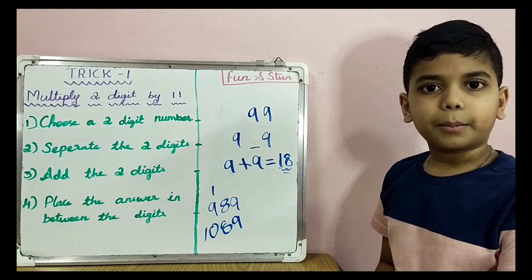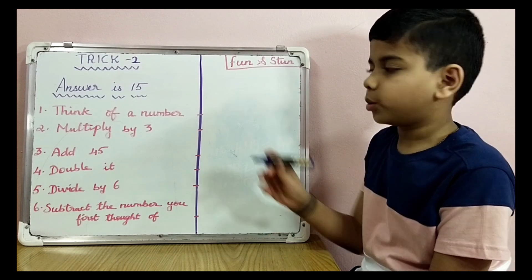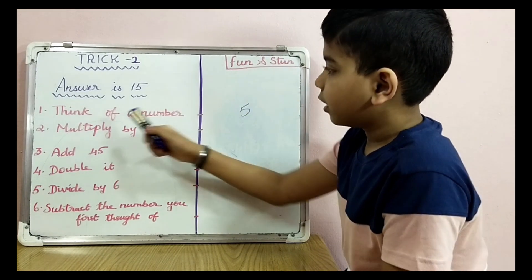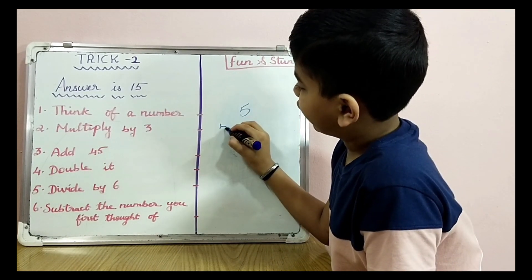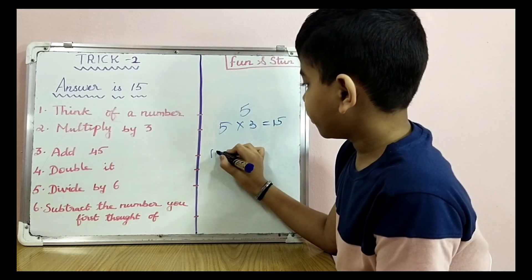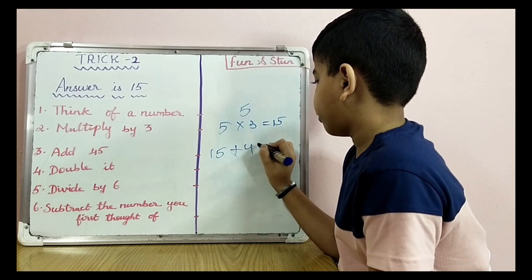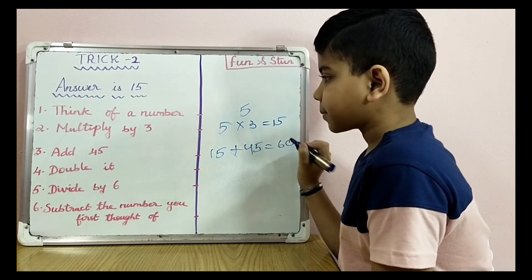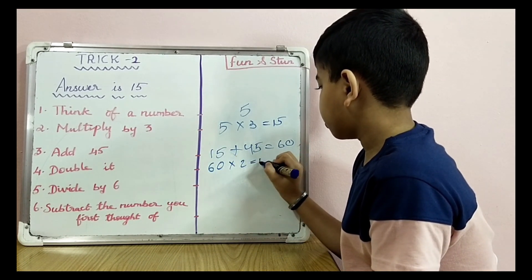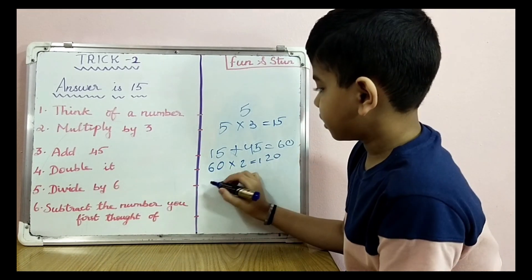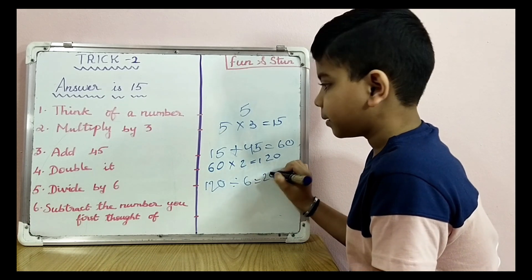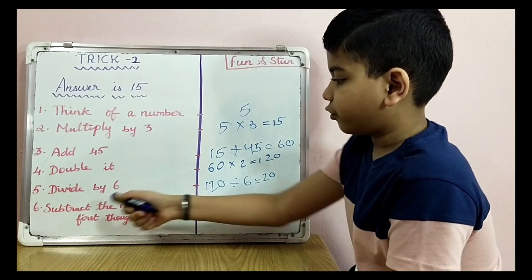Let's move on to Trick 2. Answer is 50. Think of a number. I'm going to choose 5. Multiply by 3: 5 times 3 equals 15. Add 45: 15 plus 45 equals 60. Double it: 60 times 2 equals 120. Divide by 6: 120 divided by 6 equals 20. Subtract the number you first thought of: 20 minus 5 equals 15.